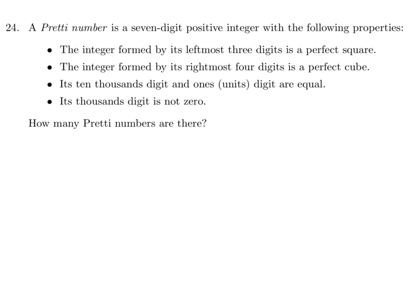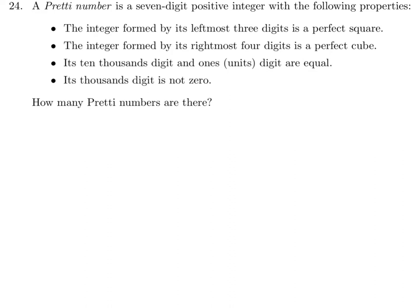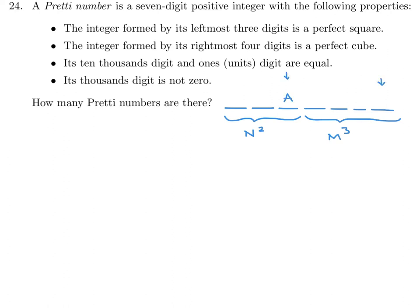A pretty number is a 7-digit positive integer with the following properties: the integer formed by its leftmost three digits is a perfect square; the integer formed by its rightmost four digits is a perfect cube; its ten-thousandths digit and ones digit are equal; and its thousandths digit is not zero. How many pretty numbers are there?